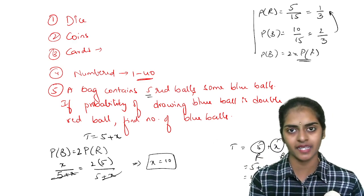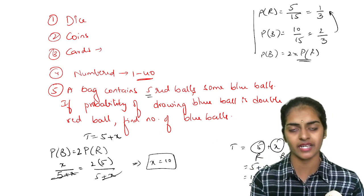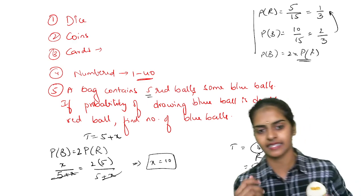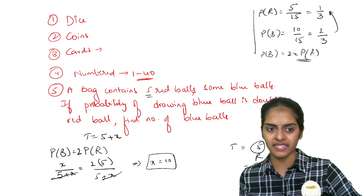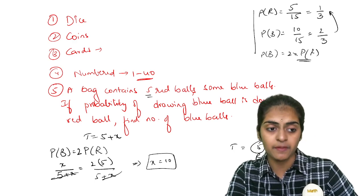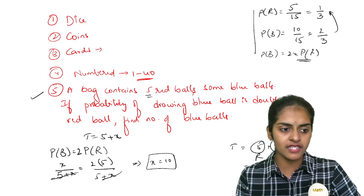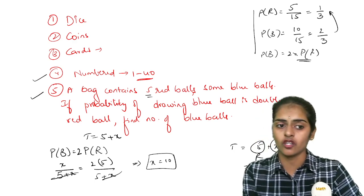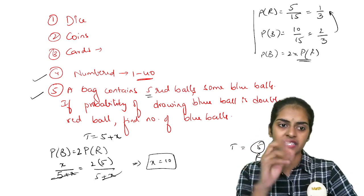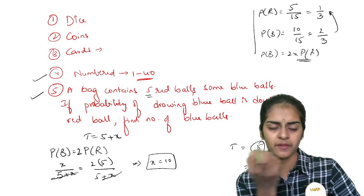The next one is when there are numbered cards. What is the probability of getting a multiple of 5 or a perfect square number? These are the questions which you can expect in this chapter particularly. They may ask this for short and this for long.